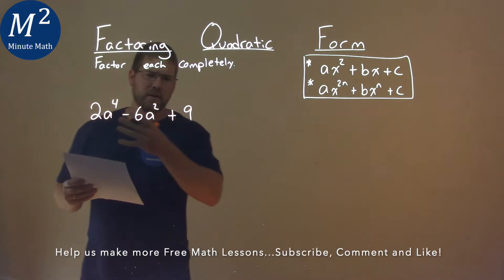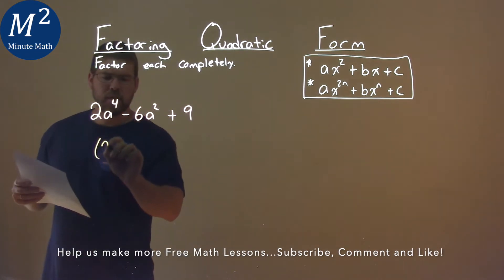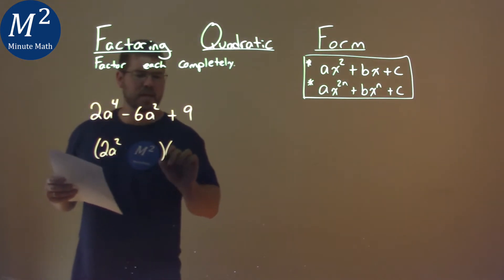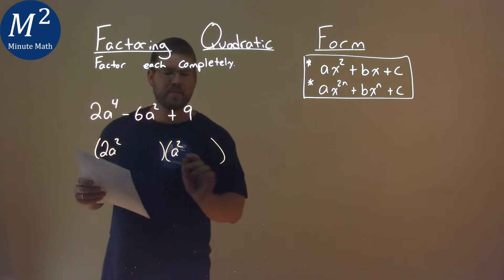Well first thing I notice it's in quadratic form so we write it as 2a squared times some a squared. This is how we're setting it up.